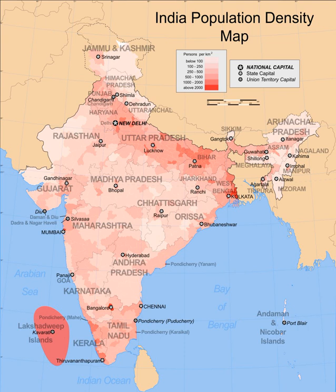India's population growth rate is 1.13%, ranking 112th in the world in 2017. India has more than 50% of its population below the age of 25 and more than 65% below the age of 35. It is expected that in 2020, the average age of an Indian will be 29 years, compared to 37 for China and 48 for Japan.